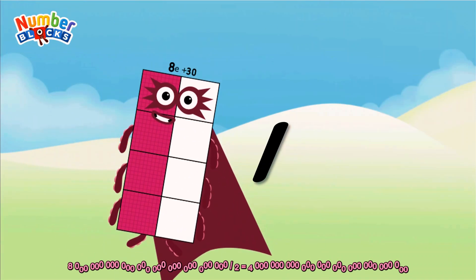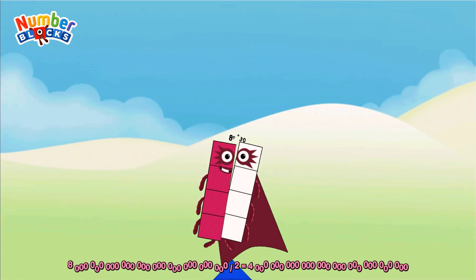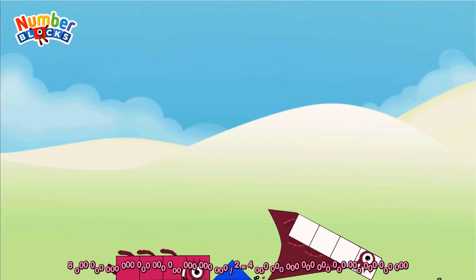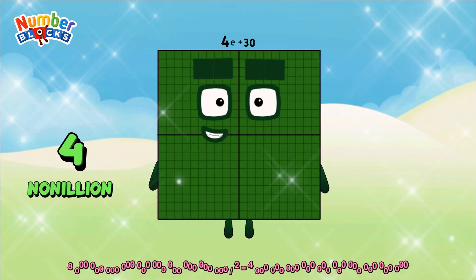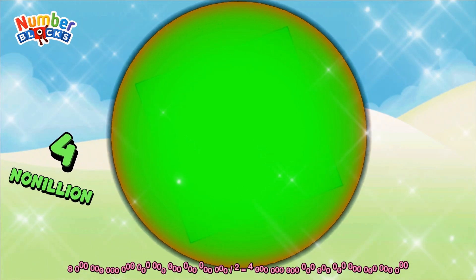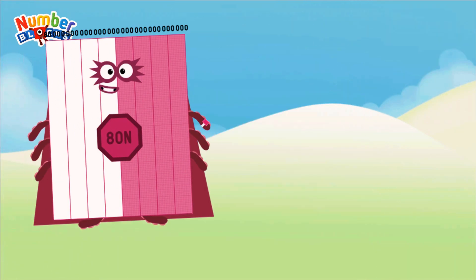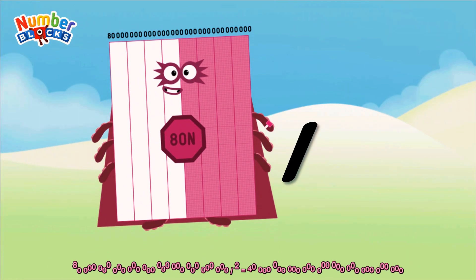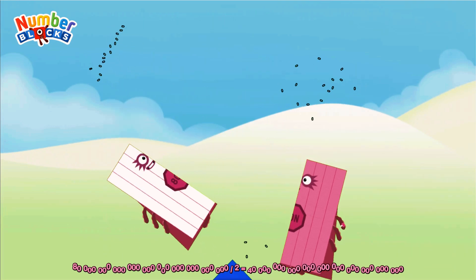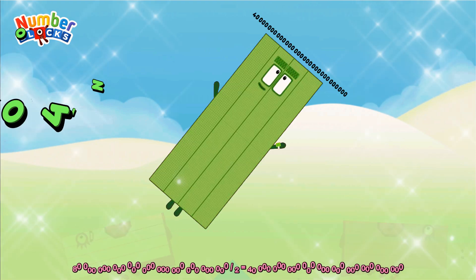800 octillion divided by 2 equals 400 octillion. 800 octillion, 80 octillion divided by 2 equals 400 octillion.